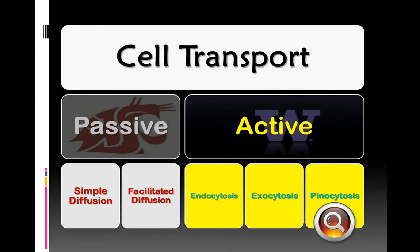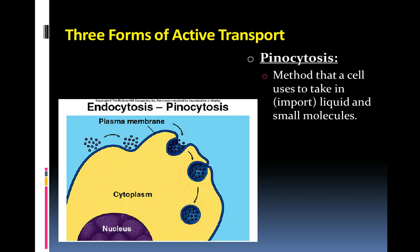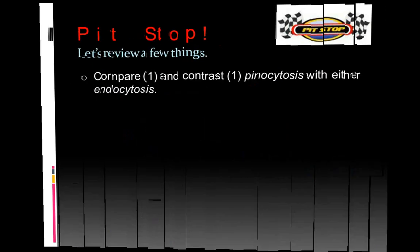And the last form of active transport is pinocytosis. And pinocytosis is basically endocytosis, but on a smaller scale. So it's the way that the cell takes in very small particles and liquid as it is fulfilling its kind of dietary needs, getting the materials that it needs to be healthy. So final pit stop. Compare and contrast pinocytosis with endocytosis.